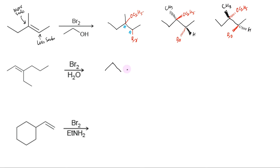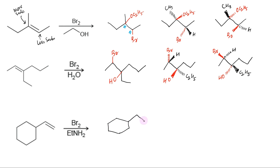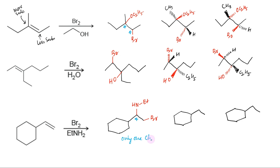In this second example, the products can be written in the same way. First, regiochemistry: bromine on the less substituted end and hydroxyl on the more substituted end. Now the stereochemistry of the product can be written by drawing the enantiomeric pair in which bromine and OH are anti to each other. In the third example, the product can be written with bromine on the less substituted carbon and the nucleophile ethylamine on the more substituted carbon. Only one chiral center is generated in the product; therefore, the product can exist as a pair of enantiomers — in one, the nucleophile will be above the plane, and in the other, it will be below the plane.